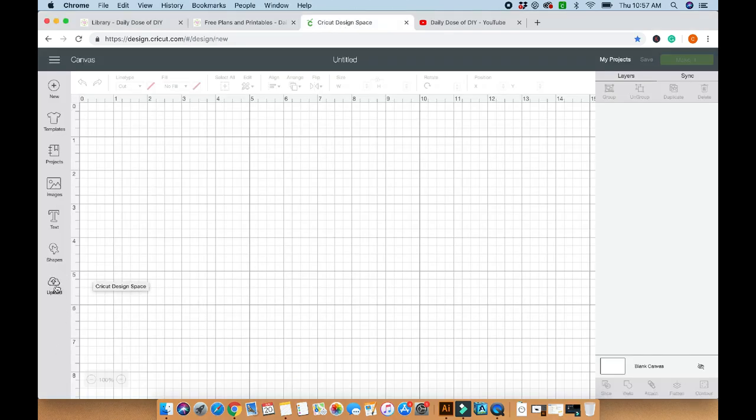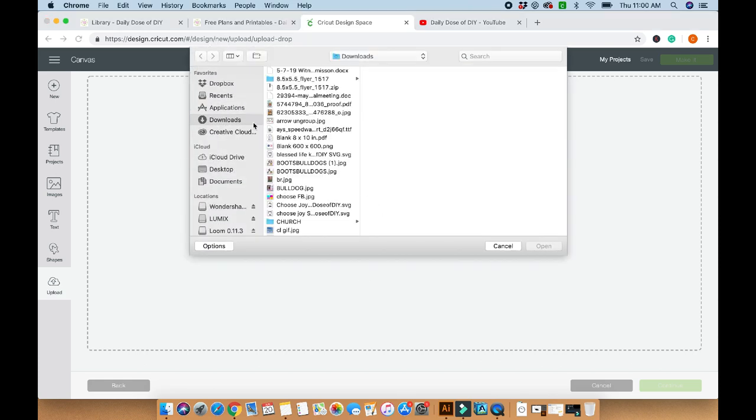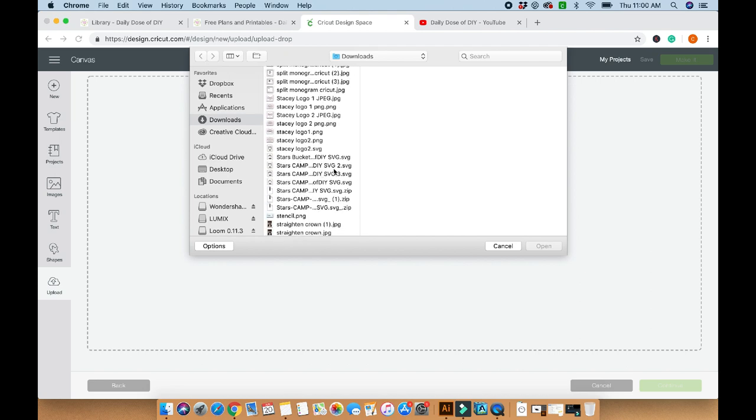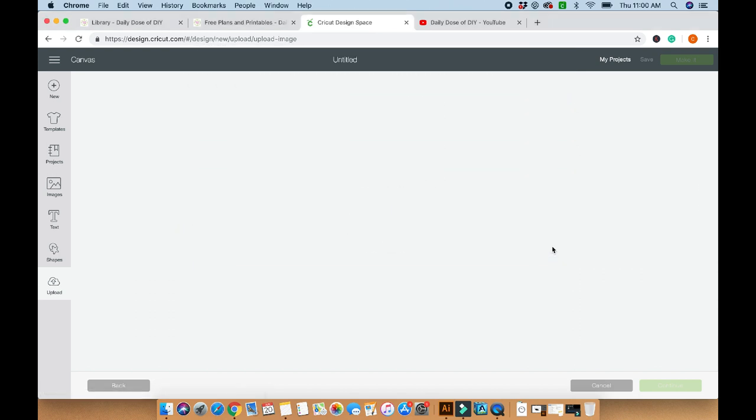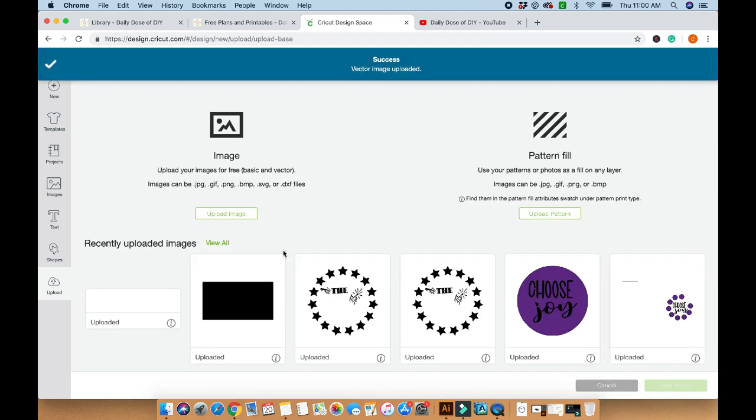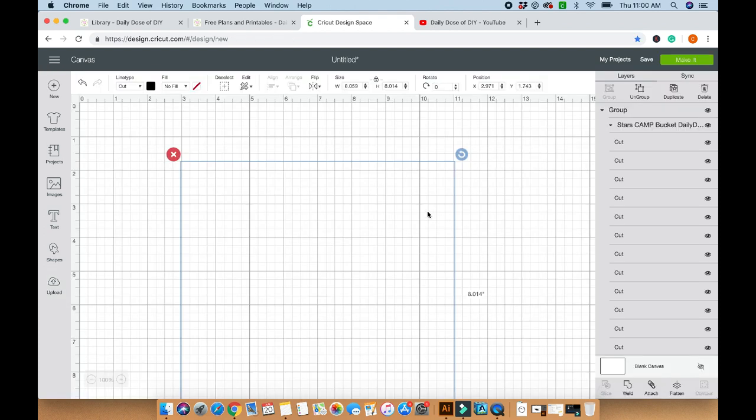So then we go into Cricut design space and we want to upload that file. So we're going to hit the browse button and that opens up my download folder. Then you go down to where the stars camp is and get the SVG. You want to make sure it ends in .SVG. And then open. That will open it up in design space. It has the image name. You can tag it if you want to. Let's just put in stars and then save. And then once the upload completes, select it over here and then come down and insert the image and then you're in design space.